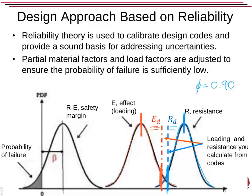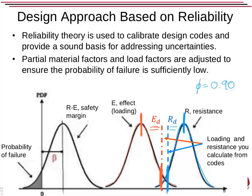If we take the difference between those, we have some sort of distribution and our probability of failure is down here. This is linked to something called a beta value. What you need to do is make sure the beta value is sufficiently high to have a certain amount of safety. You never actually see this beta value — it's done in the background in research and development. The partial factors you are given, for instance a 1.6 factor for imposed loads and 1.2 for permanent loads, are calibrated to achieve this.